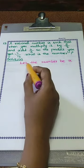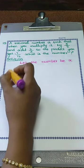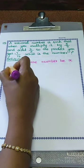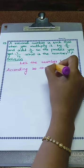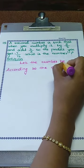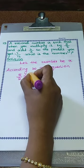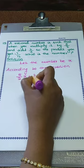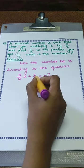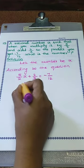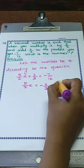So first we assume the number as x. What is given? We have to multiply x with 5 by 2. So the equation is: 5 by 2 into x, add with 2 by 3, is equal to minus 7 by 12. Transposing 2 by 3 to the RHS, the LHS value is 5 by 2 x equals minus 2 by 3 minus 7 by 12.